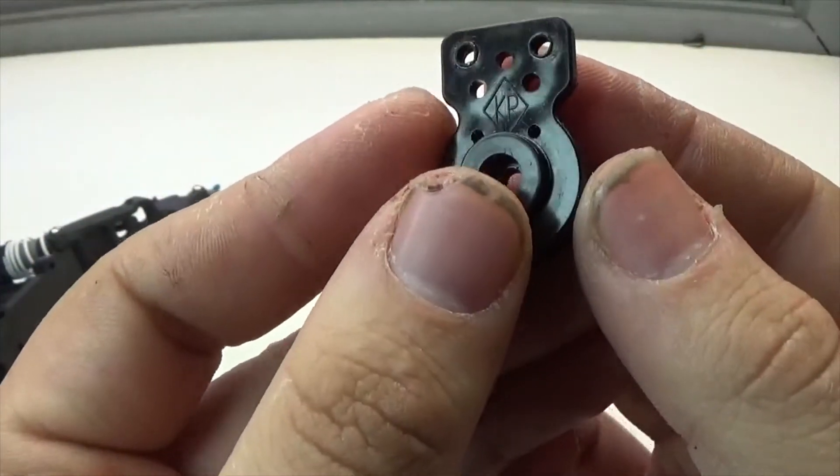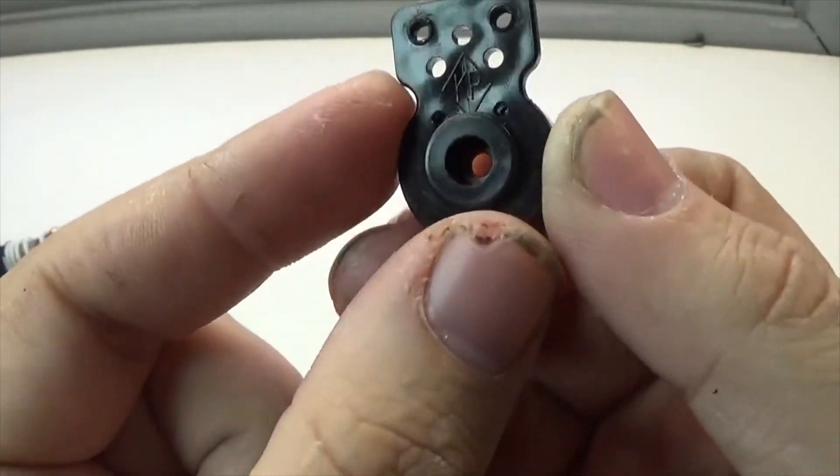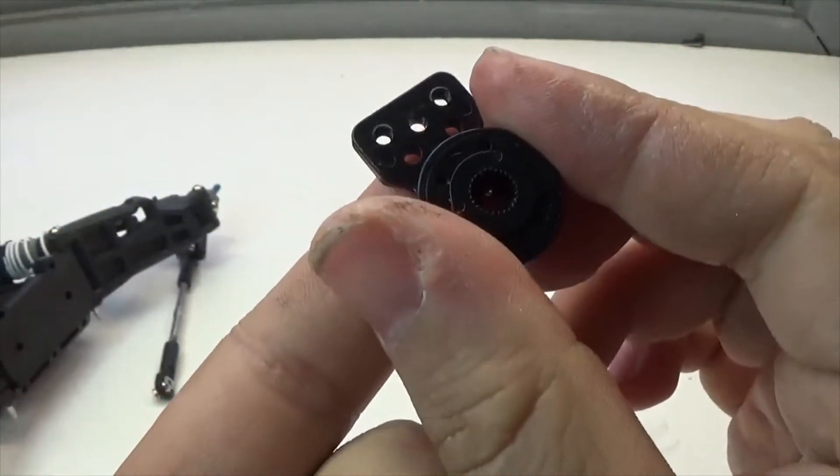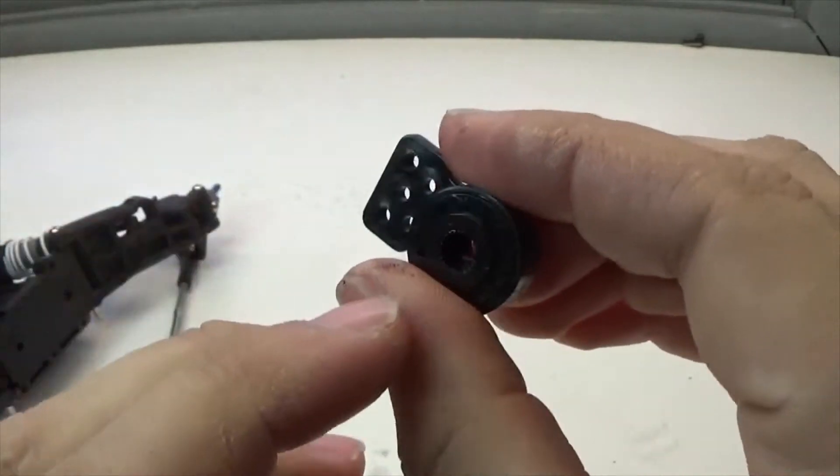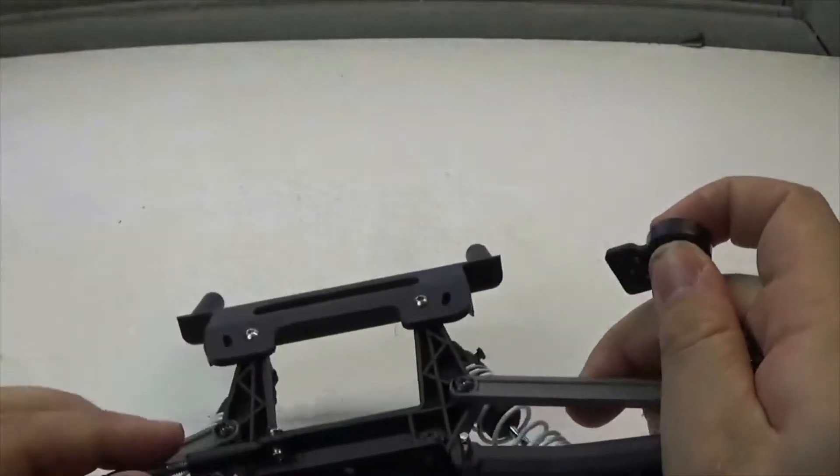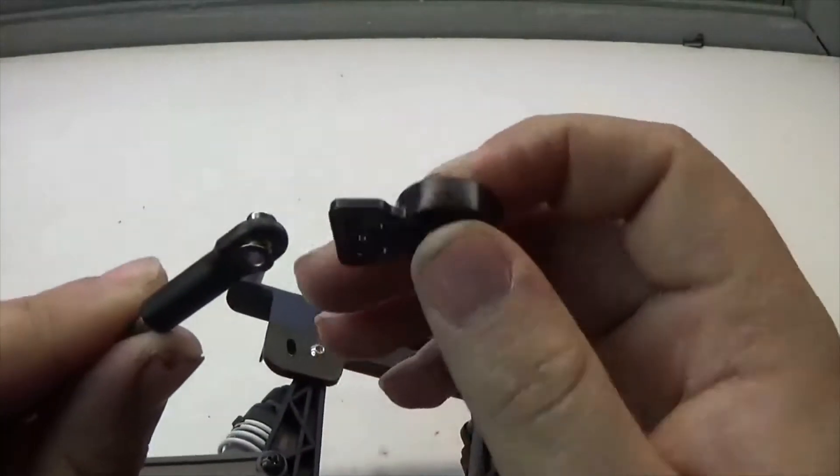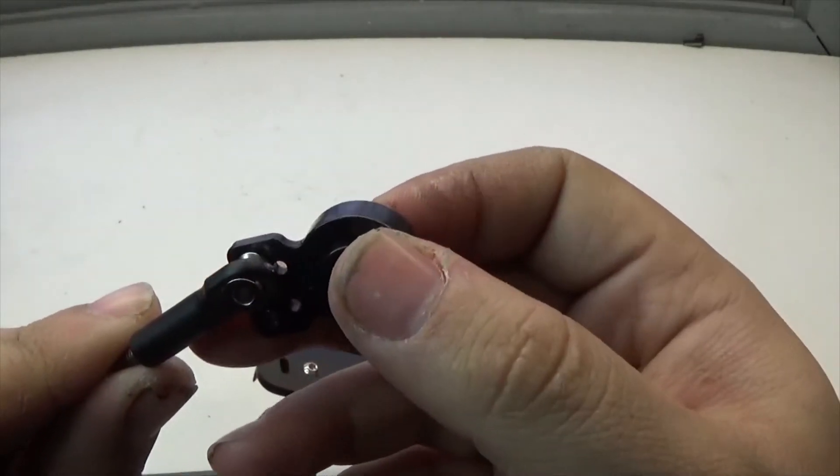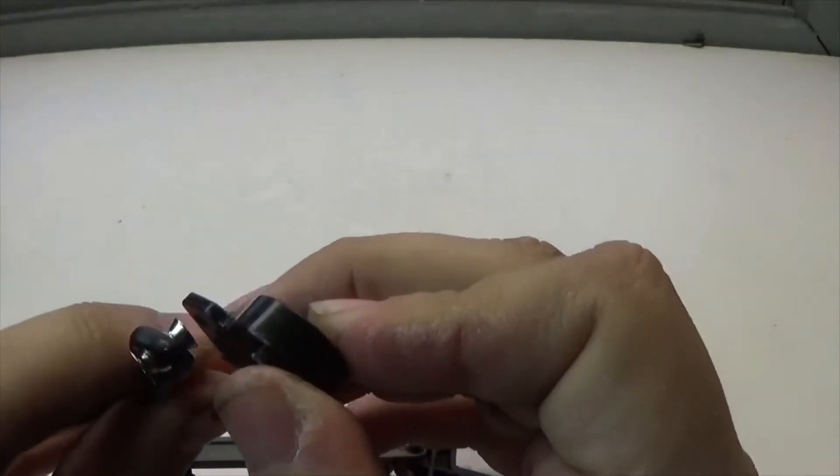Next I'm going to be using a Kimbrough servo saver. So with the spline right there facing upwards, we're going to take one of our toe links, put a screw through the top, thread it through the hole right there, and then put a nut on the other end.